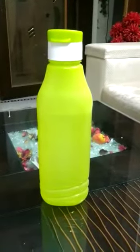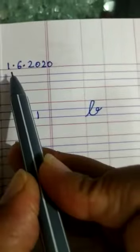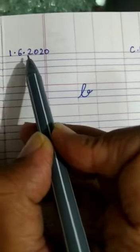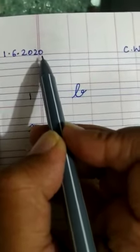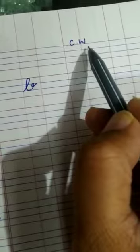B bottle. So, write down the date. 1st June 2020, 1.6.2020. Write down CW classwork.